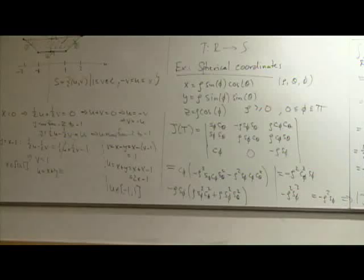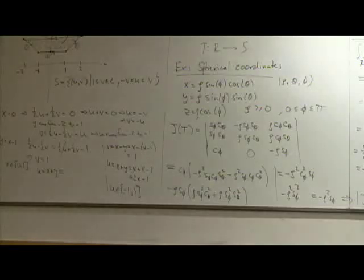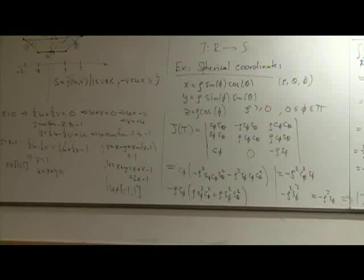So now you know where ρ² sinφ comes from in spherical coordinates — it's the Jacobian of the transformation. There are a couple of homework problems for you to test this. Tomorrow we'll finally start vector functions and vector fields.